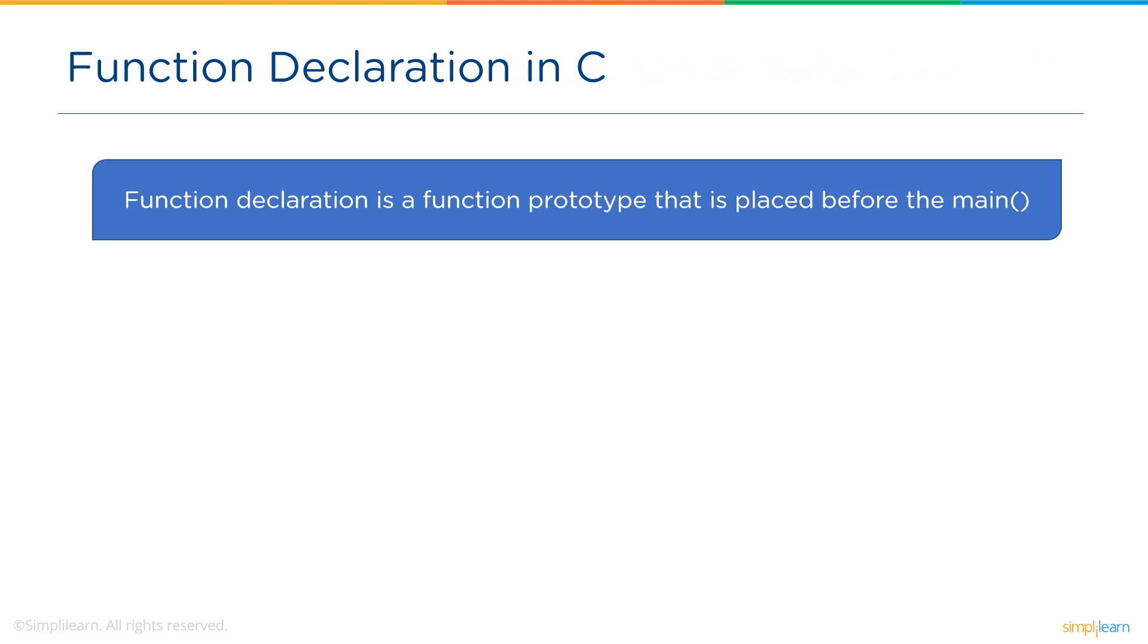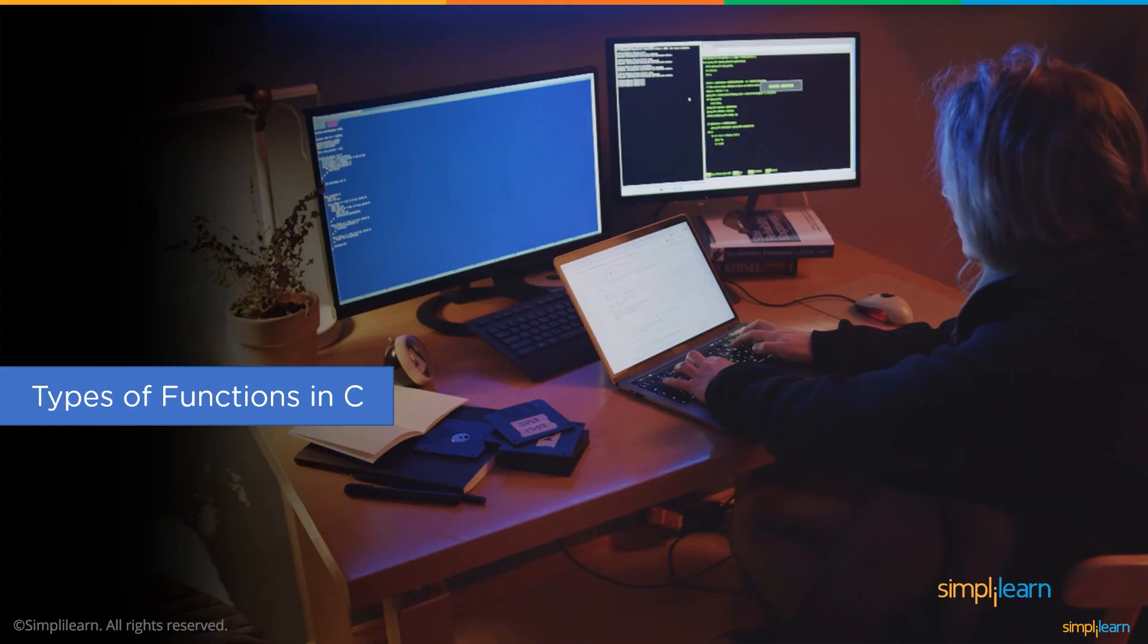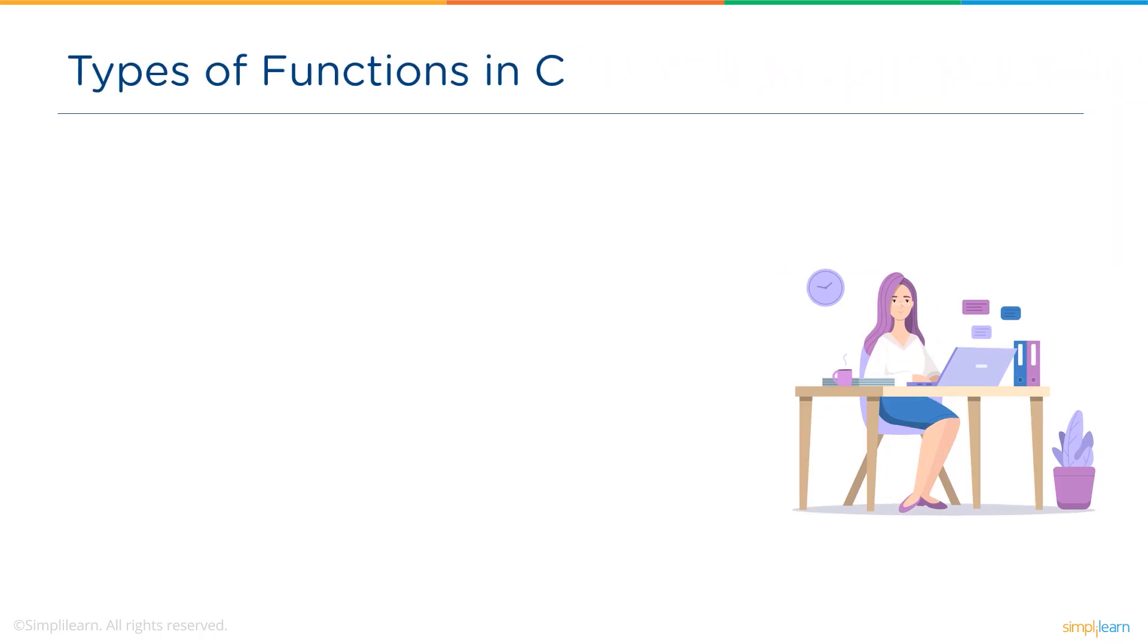The syntax of a function declaration is return type, function name, and parameter list. For example, int product and data types. If required, we can also specify variables along with the data type like int a comma int b. Now that we know function definition and declaration in C language, let's go ahead and understand the types of functions in C.